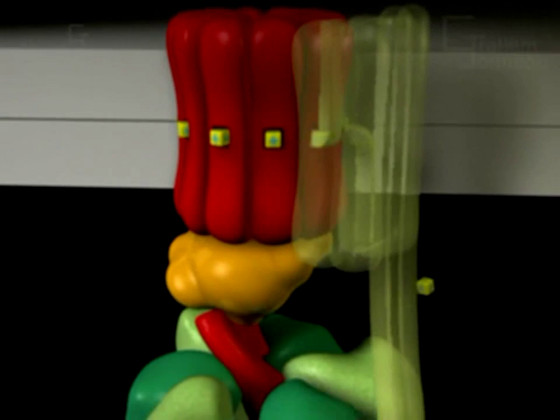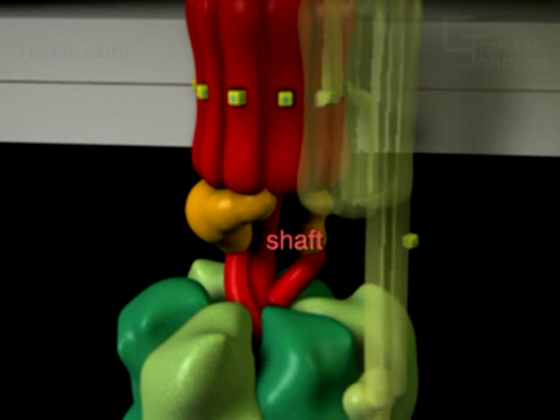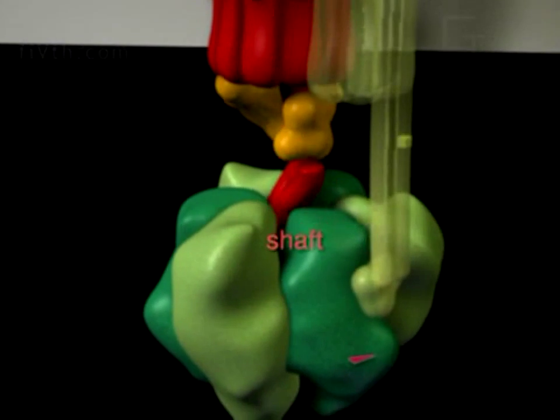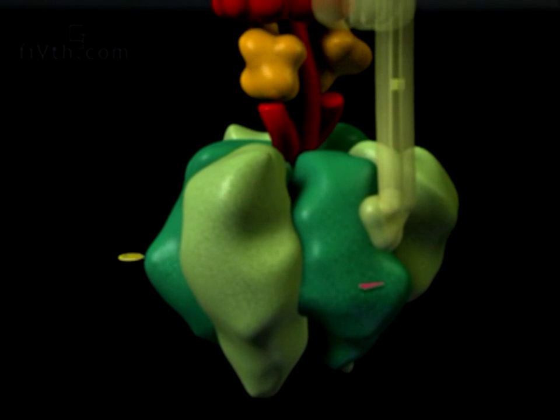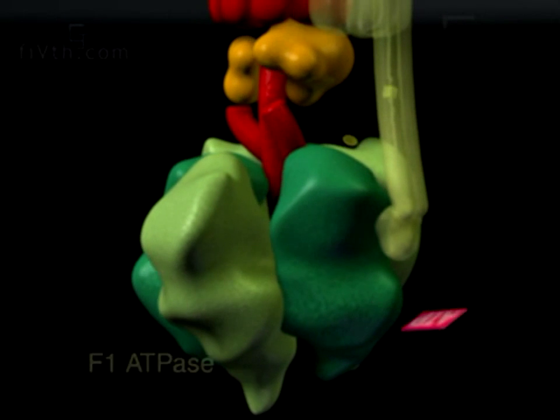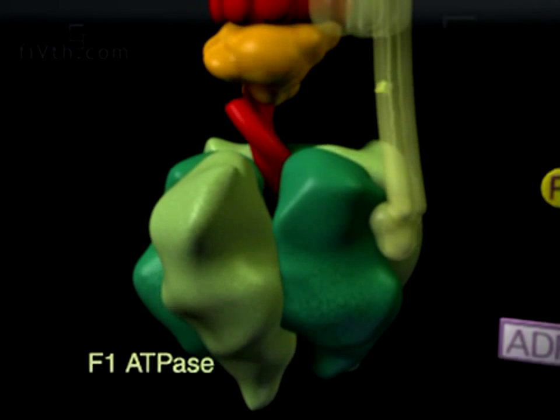The rotational energy is transmitted via a shaft attached to the rotor that penetrates deep into the center of the characteristic lollipop head, the F1 ATPase, which catalyzes the formation of ATP.